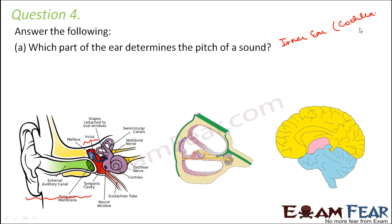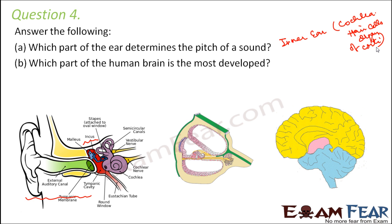To be more specific, you can say the hair cells present in the organ of Corti in the cochlea. So you can say it is the inner ear, or the cochlea, specifically the hair cells in the organ of Corti.